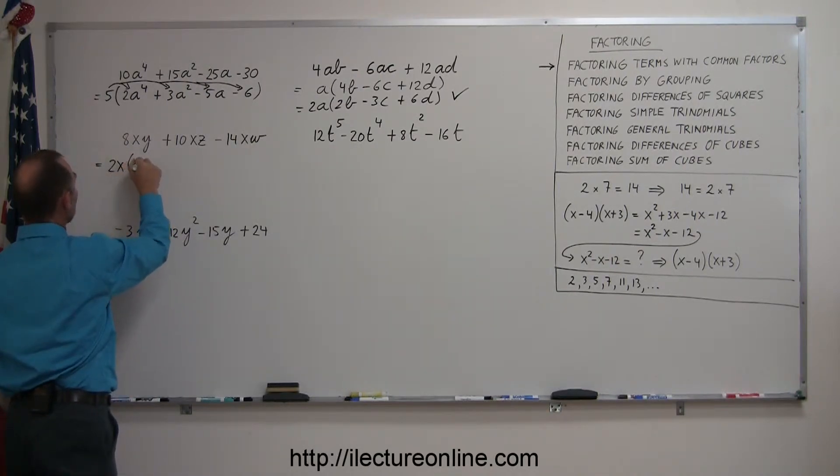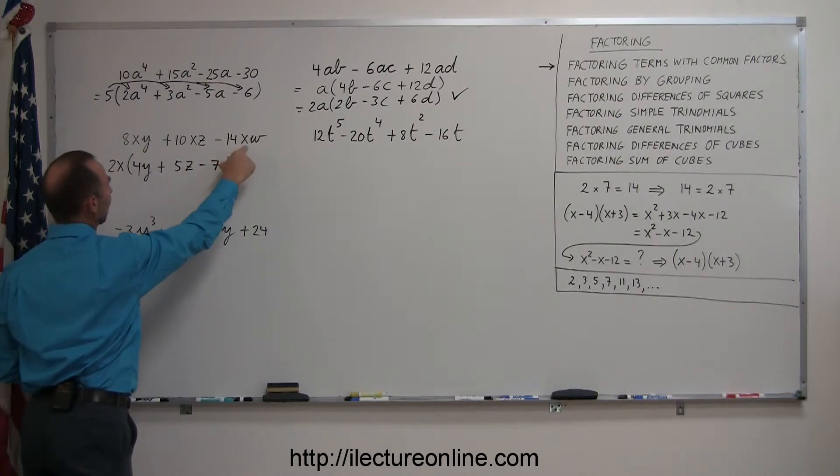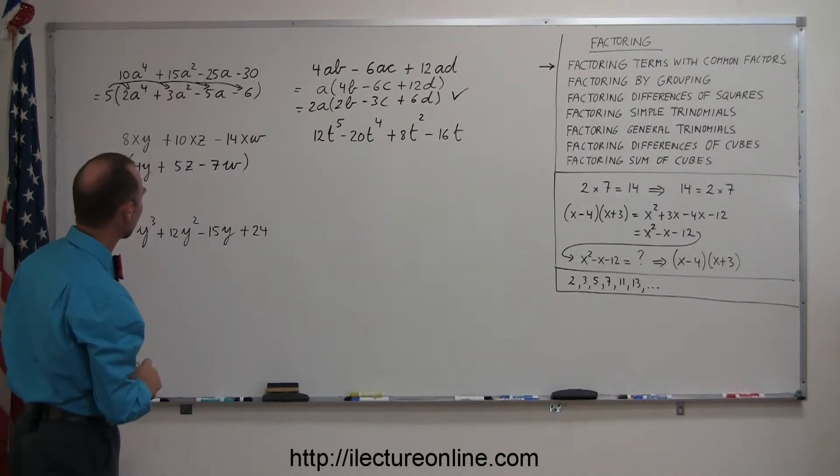8 divided by 2 is 4. I factor out the x, so I simply have a y left. 10 divided by 2 is 5. I've already factored out the x, so I have a z left. And 14 divided by 2 is 7. Of course, don't forget the minus sign, so that's minus 7. I already factored out the x, so I have a w left, and there's the answer. That's the factored form of what I started with.